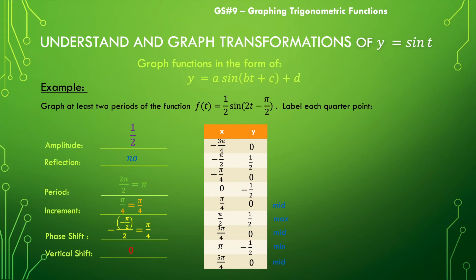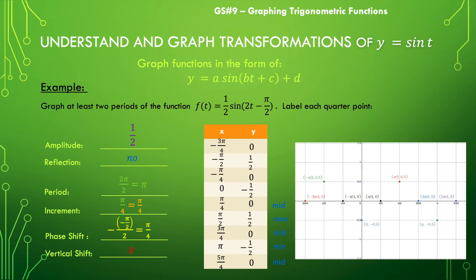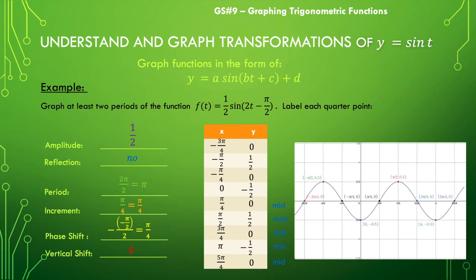We can go ahead and do that, and we get something that looks kind of like this. When we sketch the curve we should get a nice smooth sinusoidal function — nice wavy action going on there — and we're good to go.